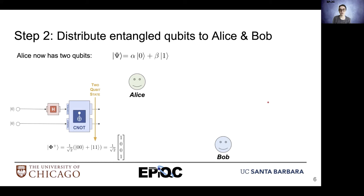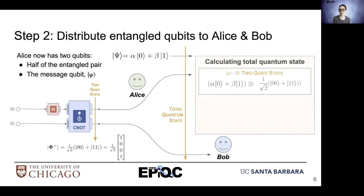Now we'll have Alice with the mystery qubit psi that will act as our message. We'll have a total quantum state including the message qubit and the two entangled qubits. So we'll have the contents of psi — alpha ket zero, beta ket one — tensor with one over square root of two times